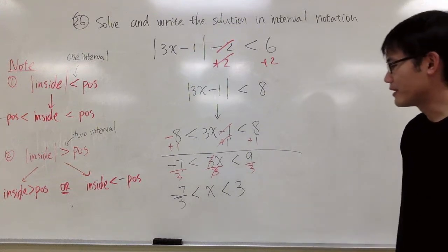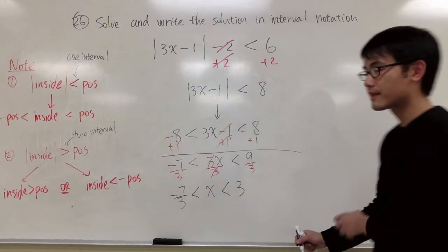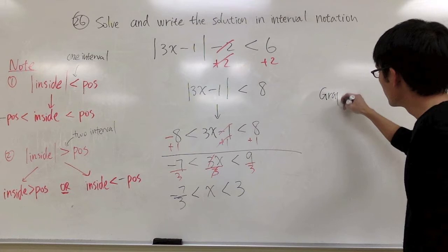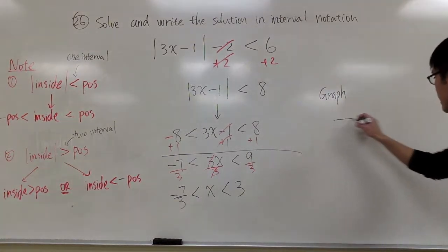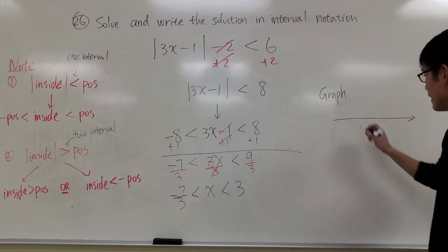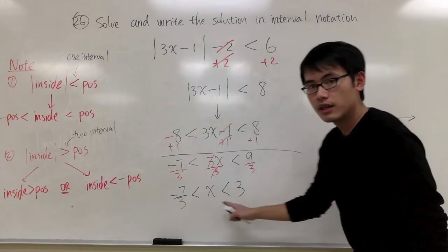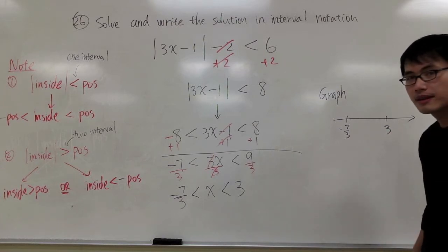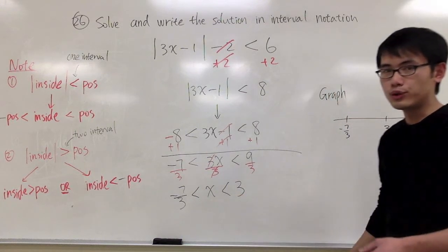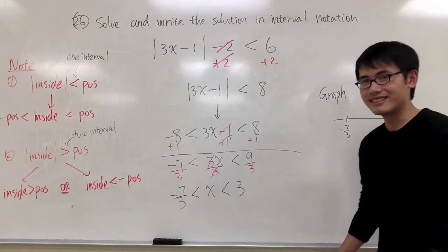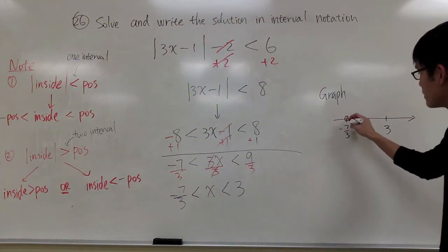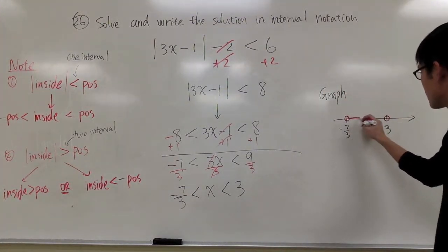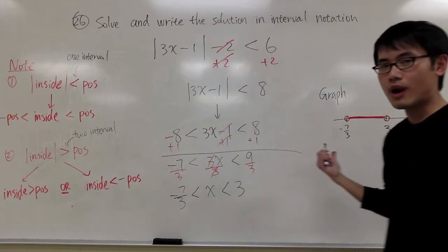So x is between negative 7 over 3 and 3. Even though the question didn't ask us to graph it, I'd like to show you. I put down the number line and mark negative 7 over 3 and positive 3. Since we only have less than — no equal to — we use open circles on both numbers and shade in between. Alternatively, you can use parentheses instead of open circles; both are fine.